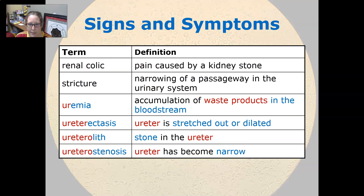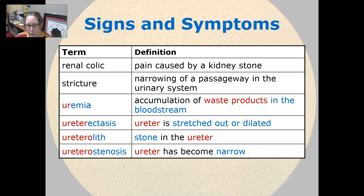Renal colic is a pain caused by a kidney stone. Stricture is a narrowing of a passageway in the urinary system. Uremia is the accumulation of waste products in the bloodstream.